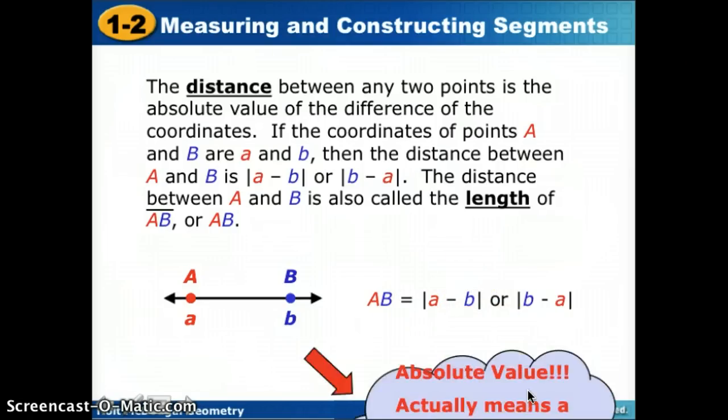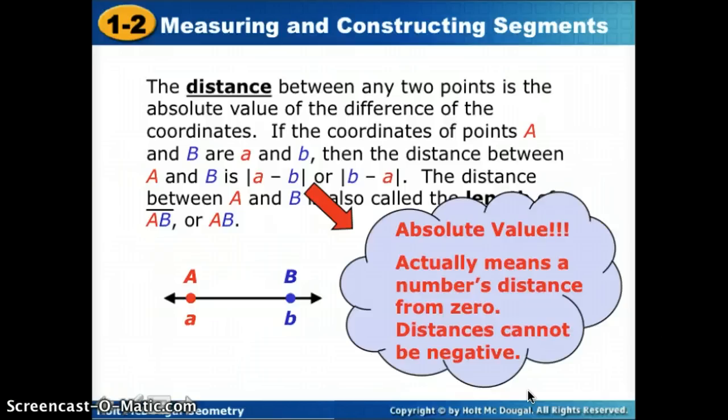We need to remind ourselves, what is absolute value? Absolute value actually means a number's distance from 0. So negative 4, how many spaces is negative 4 from 0? It's 4. We change that distance to positive, because distances cannot be negative. You'll figure this out best by just practicing.